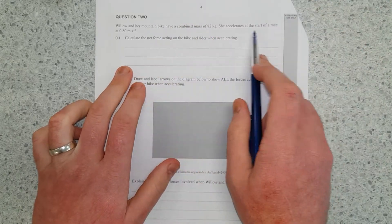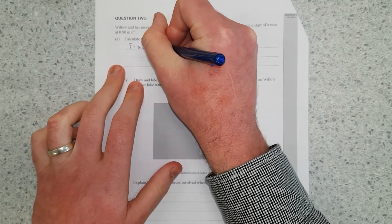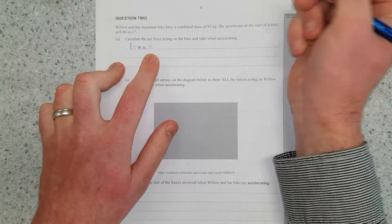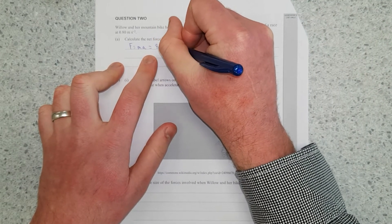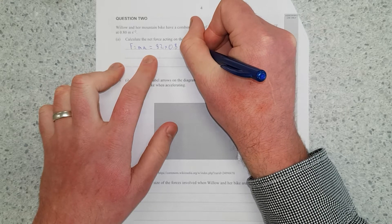The unbalanced force is this one here. So force equals mass times acceleration. So we get, 82 times 0.8, and that equals